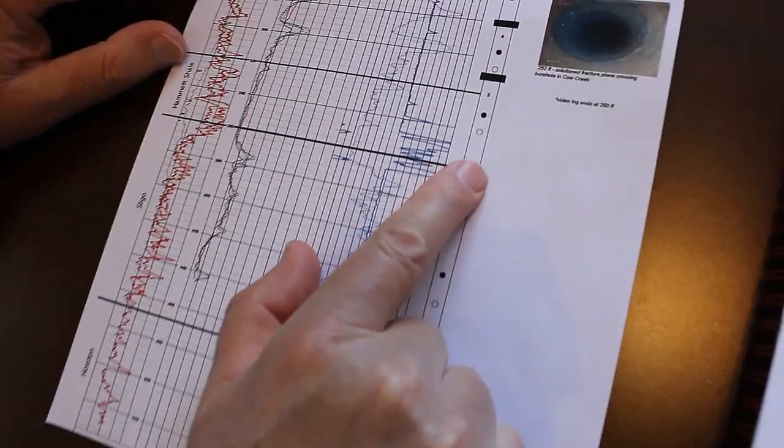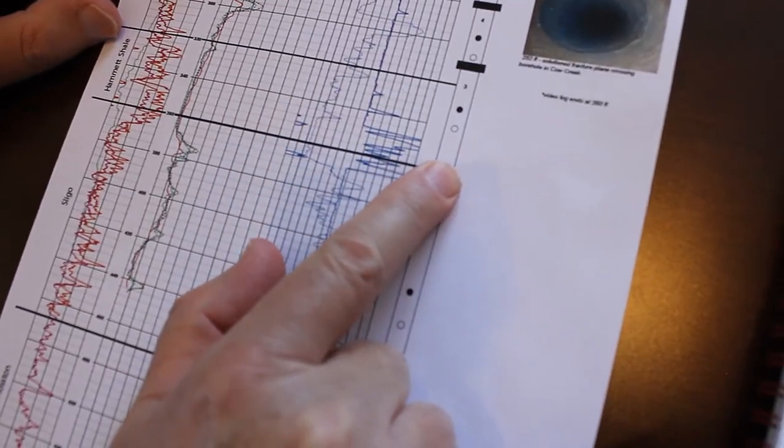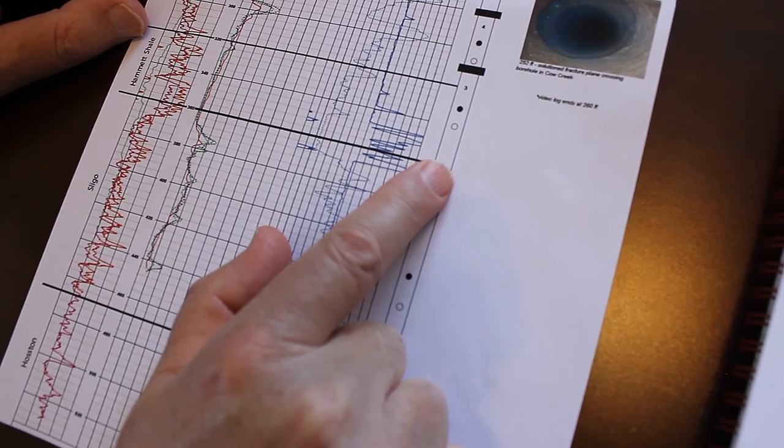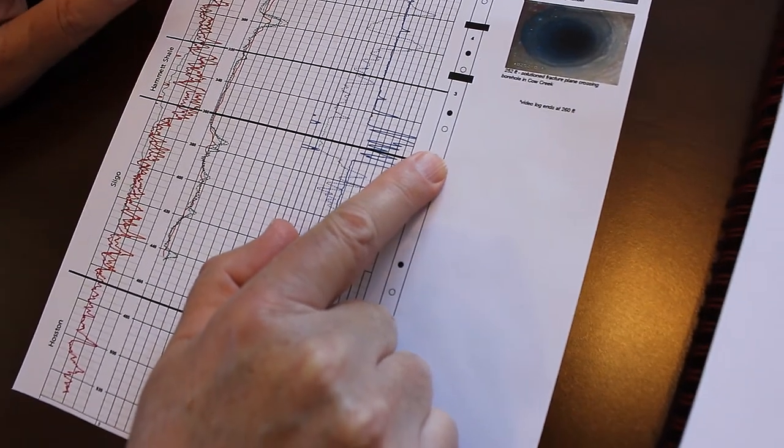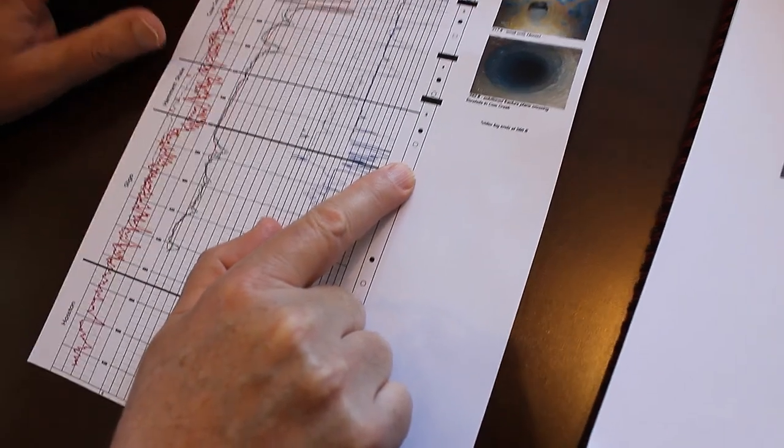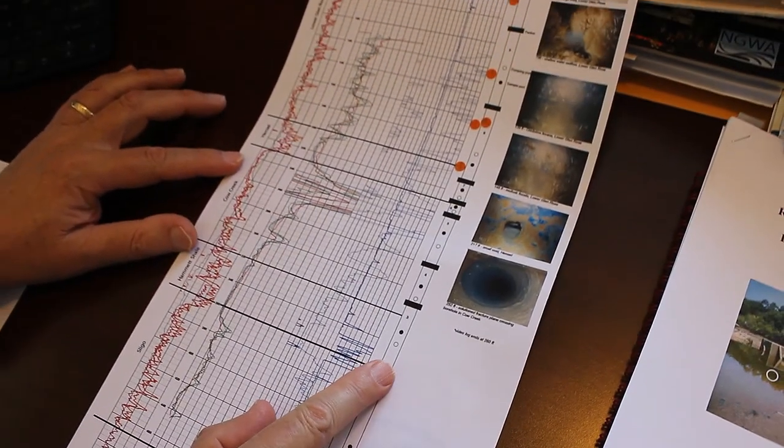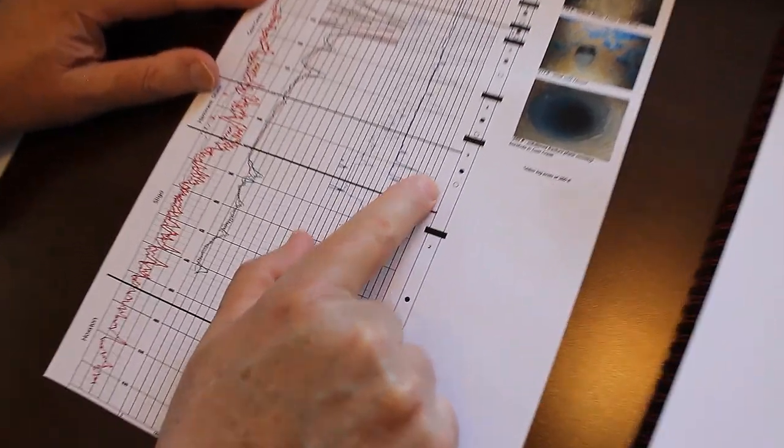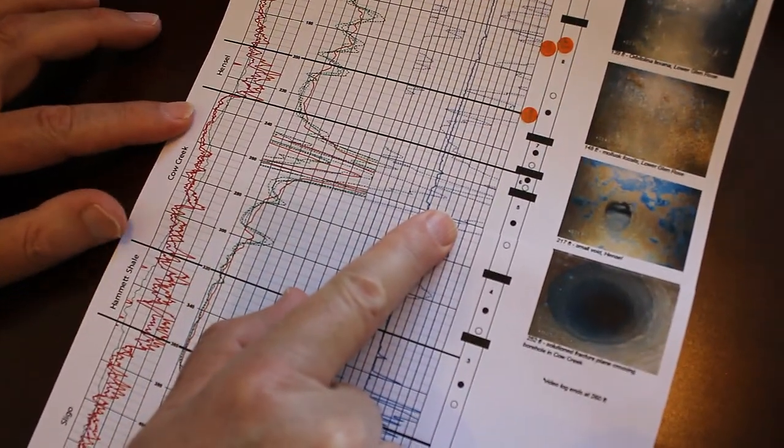The Hammett Shale is extremely tight. Pretty much no water can move through in the time frames we're interested in. So we basically get 0.1, 0.01, 0.001 permeabilities in feet per day. Extremely low permeability here and very high permeability in the Cow Creek.